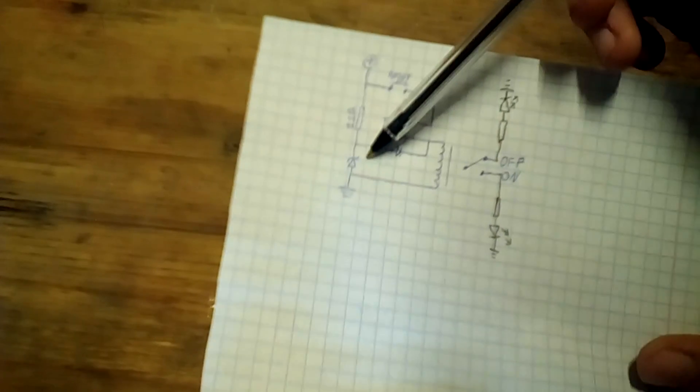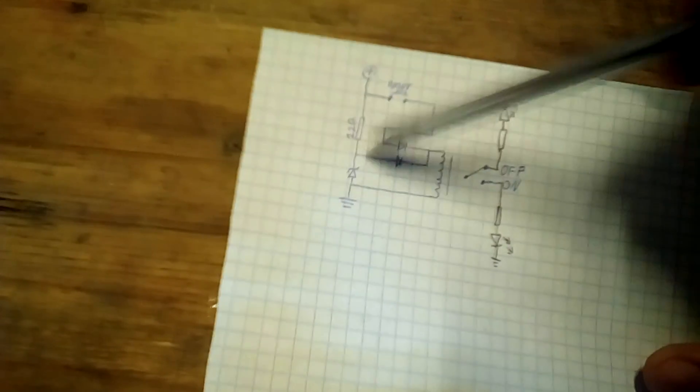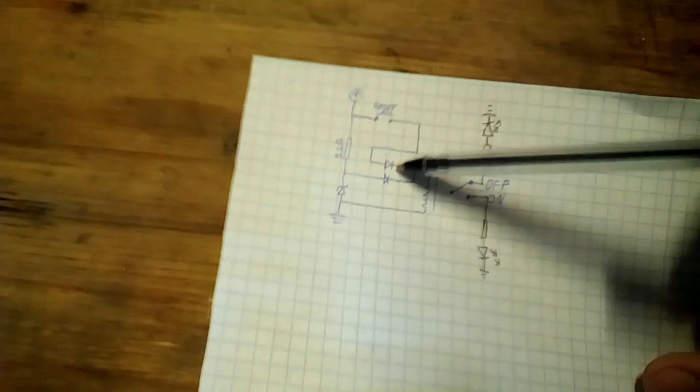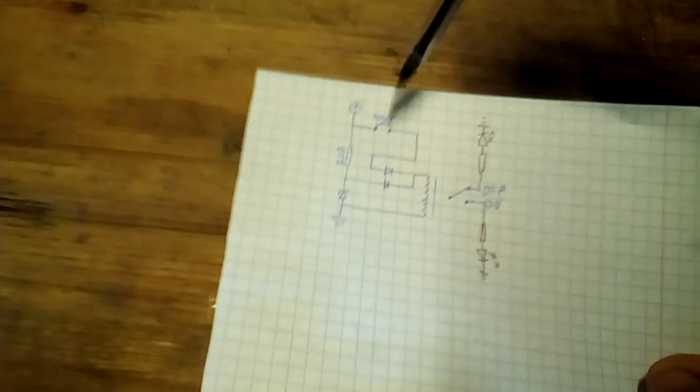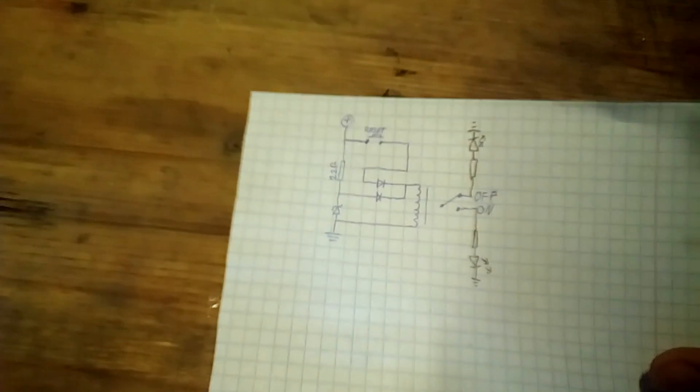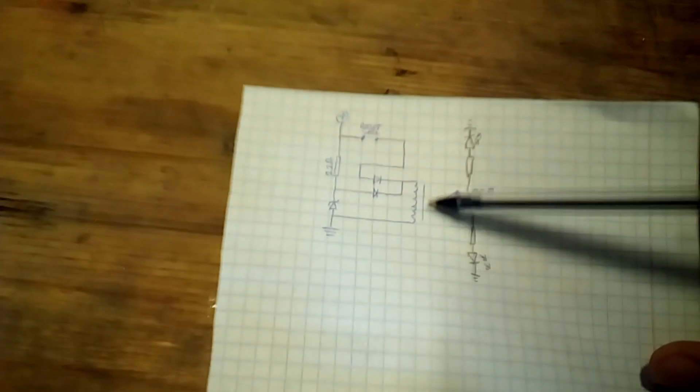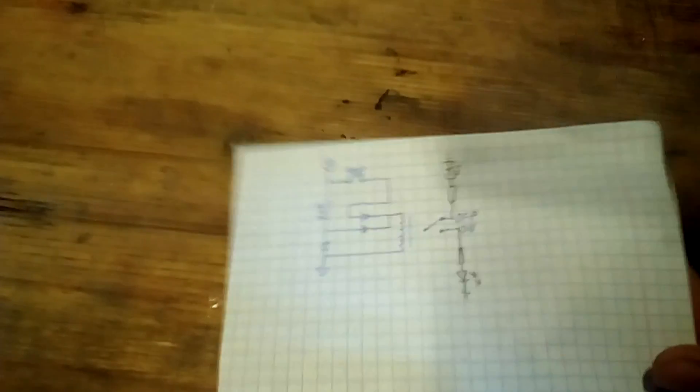There I used a 6.3 volt Zener diode. There's some diodes, a push button, and there a 20 ohm resistor. And it's a normal relay from a car. It's double pole.